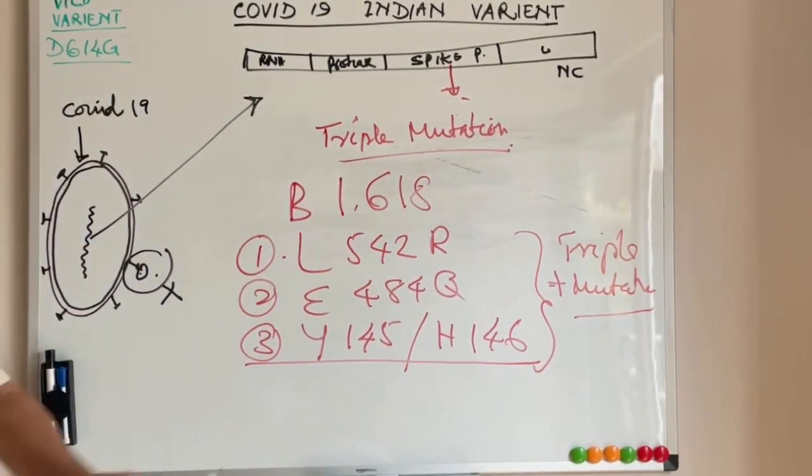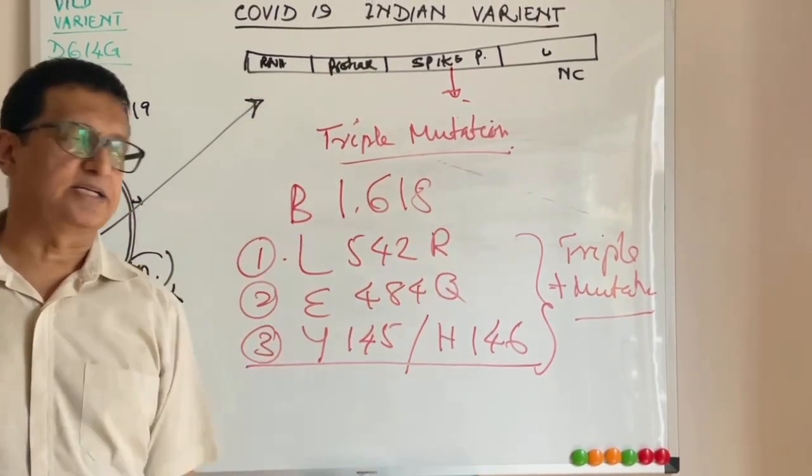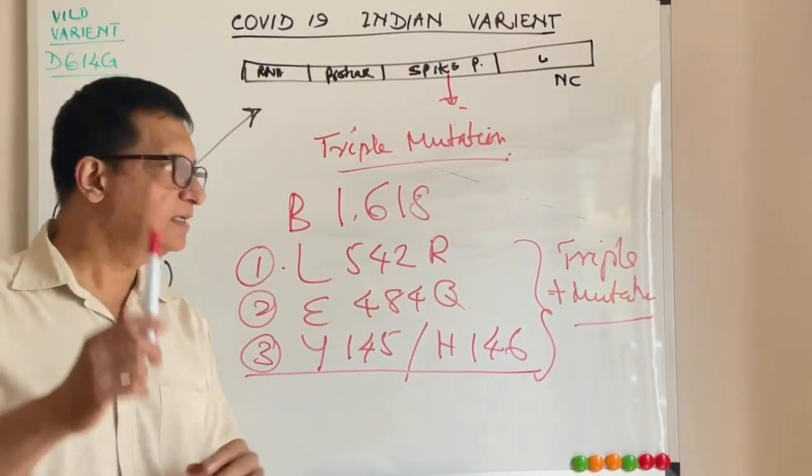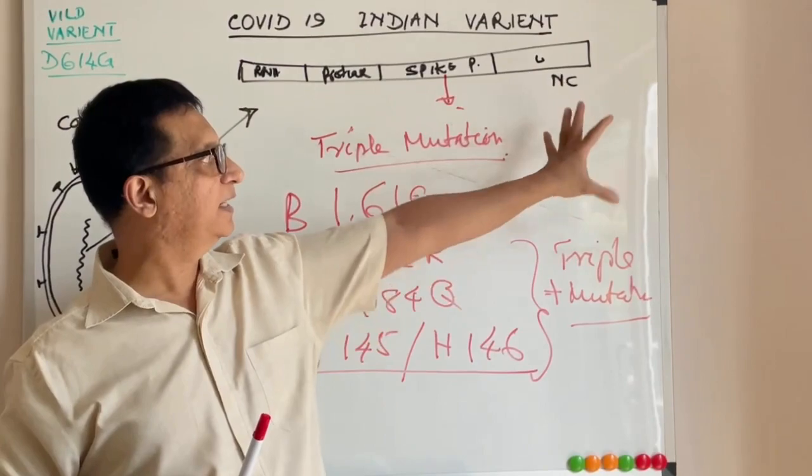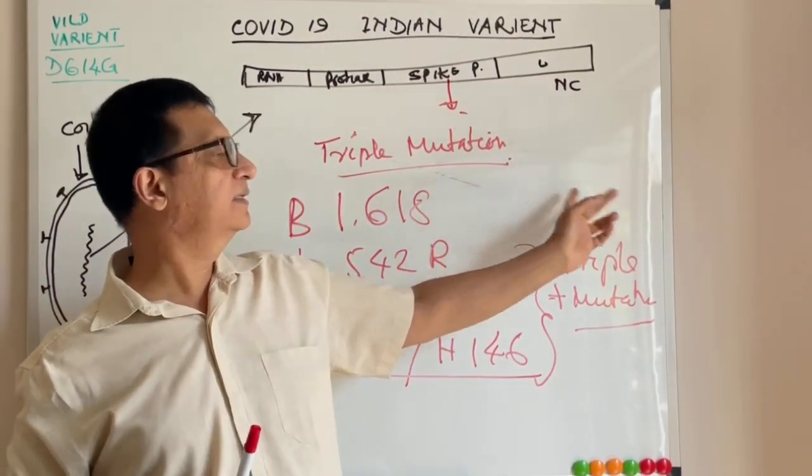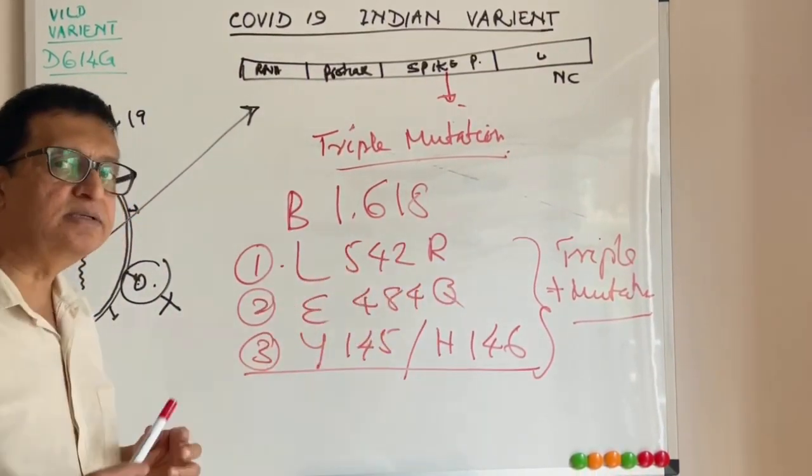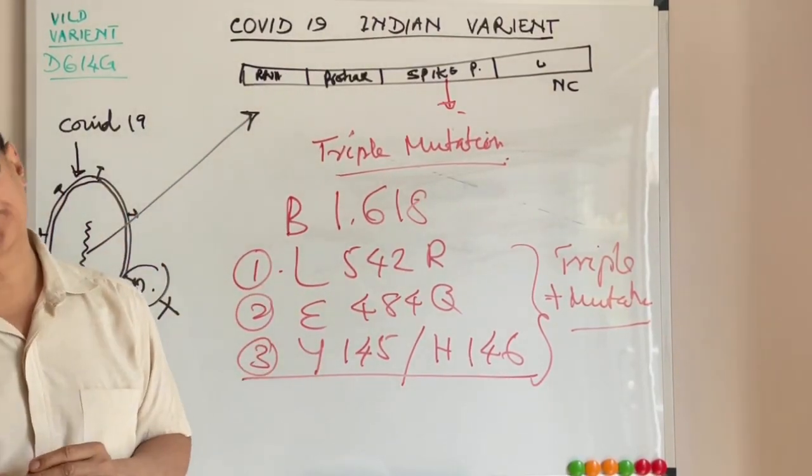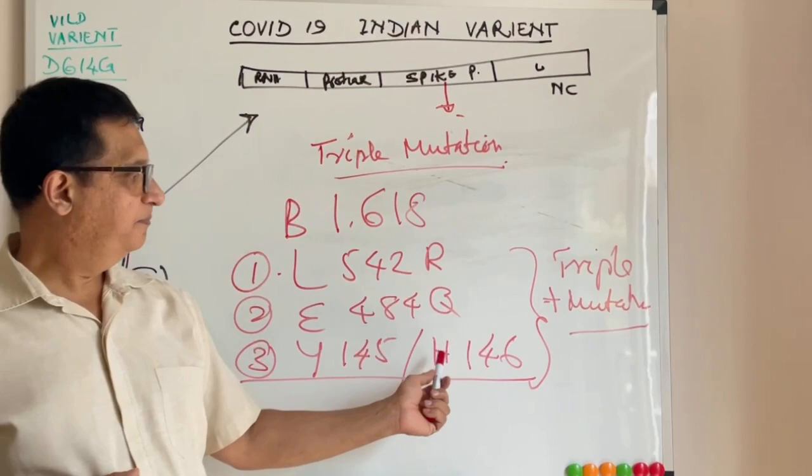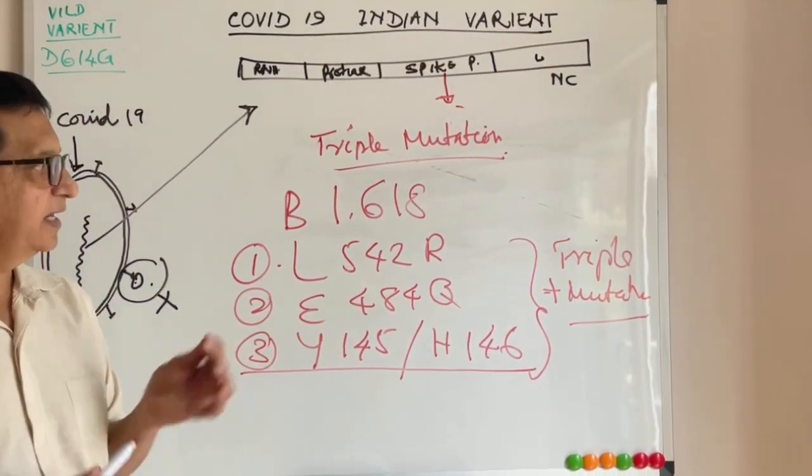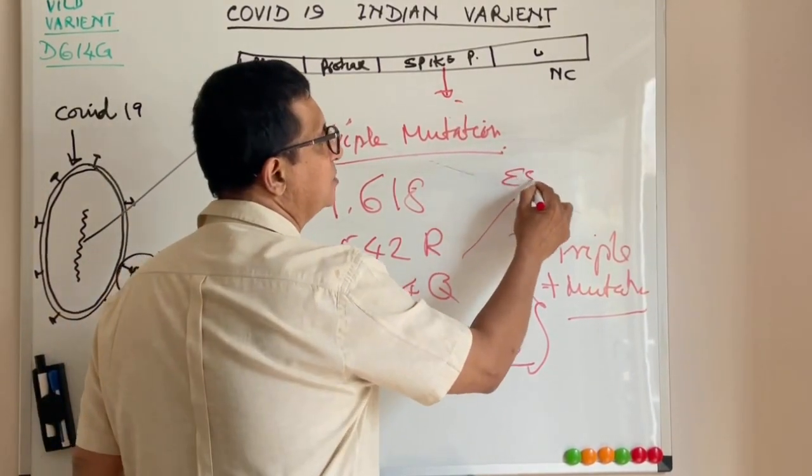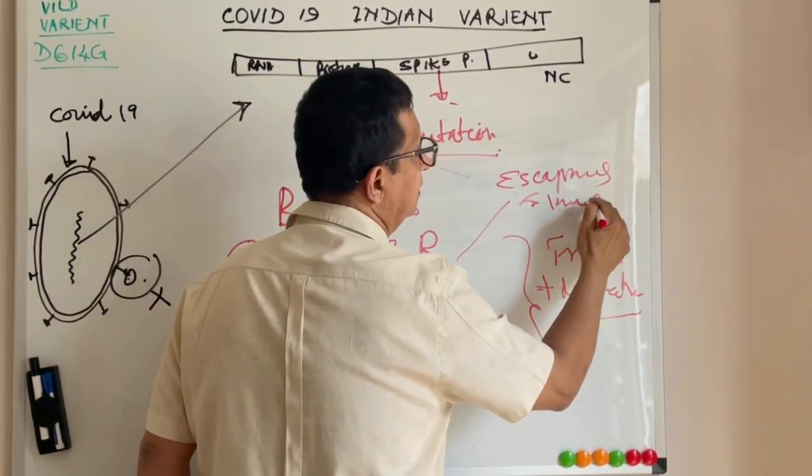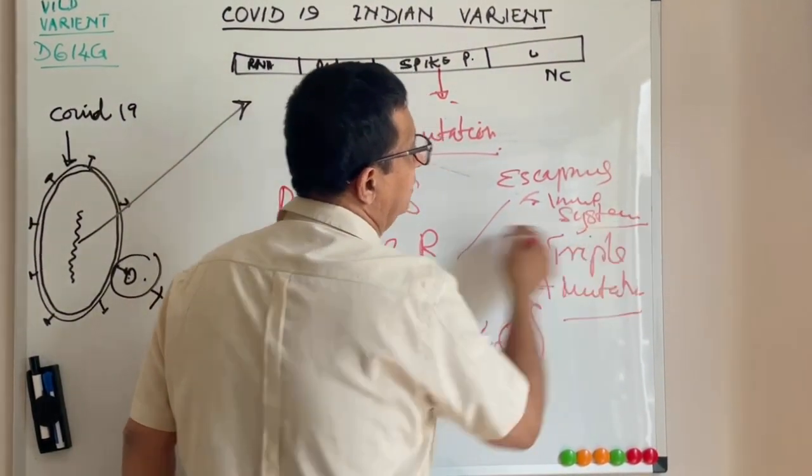When some of the proteins are deleted from the spike, it is a big concern. The concern is the antibodies produced against the spike can't recognize the spike properly because of the deletion of certain protein sequences in the spike protein. These are the mutations which are capable of escaping from the immune system.